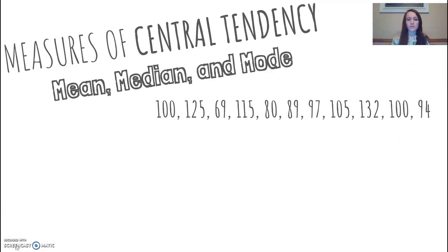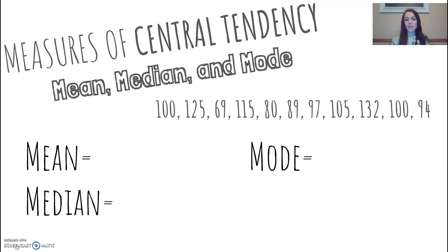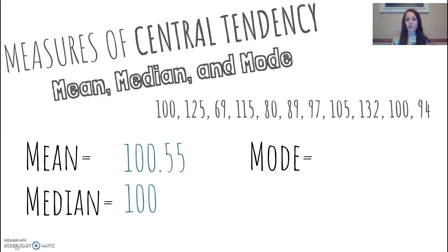If you want some practice with measures of central tendency, I'll give you a number set here — go ahead and pause the video now to find the mean, median, and mode. The mean should be 100.55 — I rounded up — your median should be 100, and your mode should be 100. I purposely chose numbers that are common IQ scores, since an average IQ score is 100, and these all fall around the average.